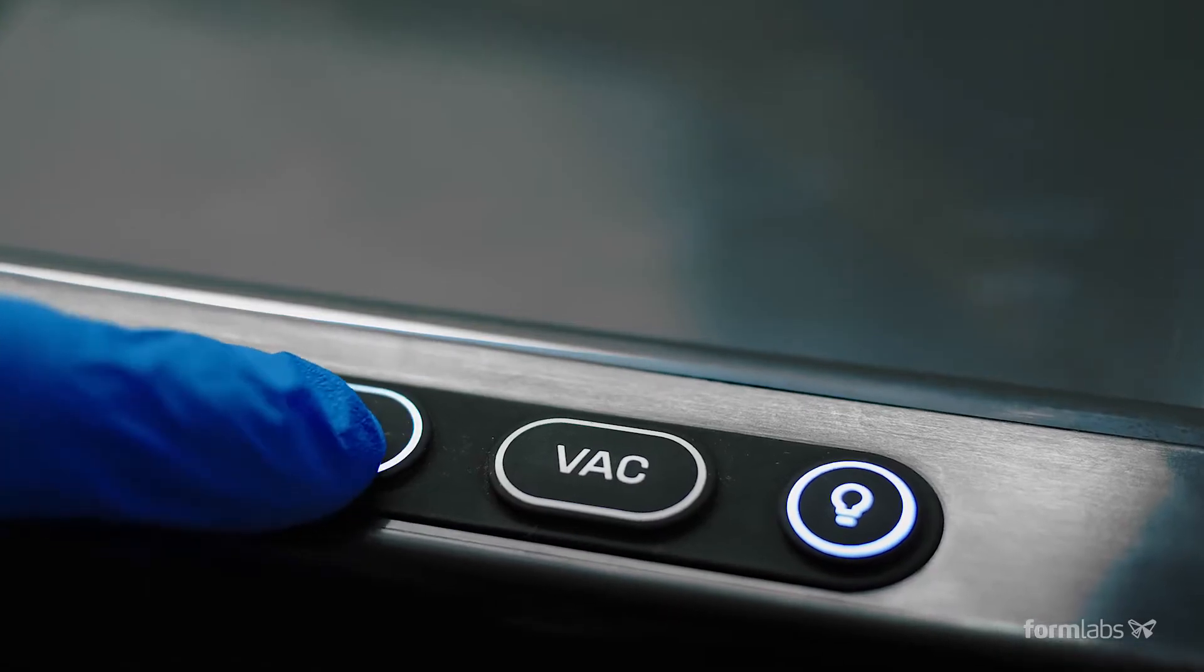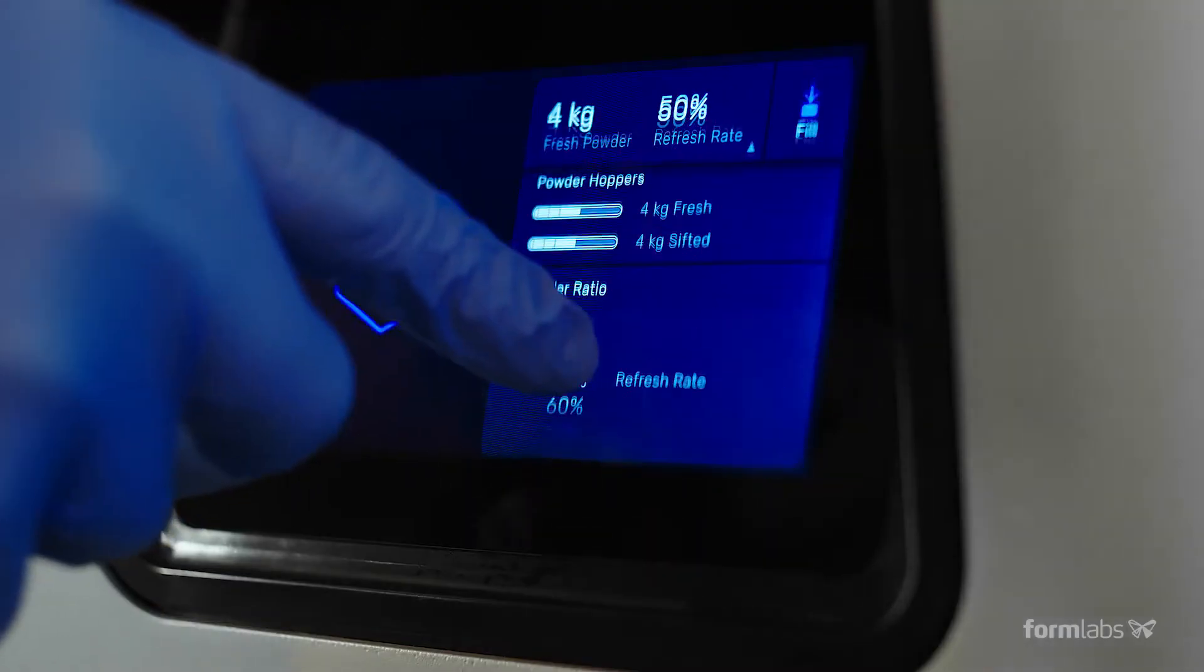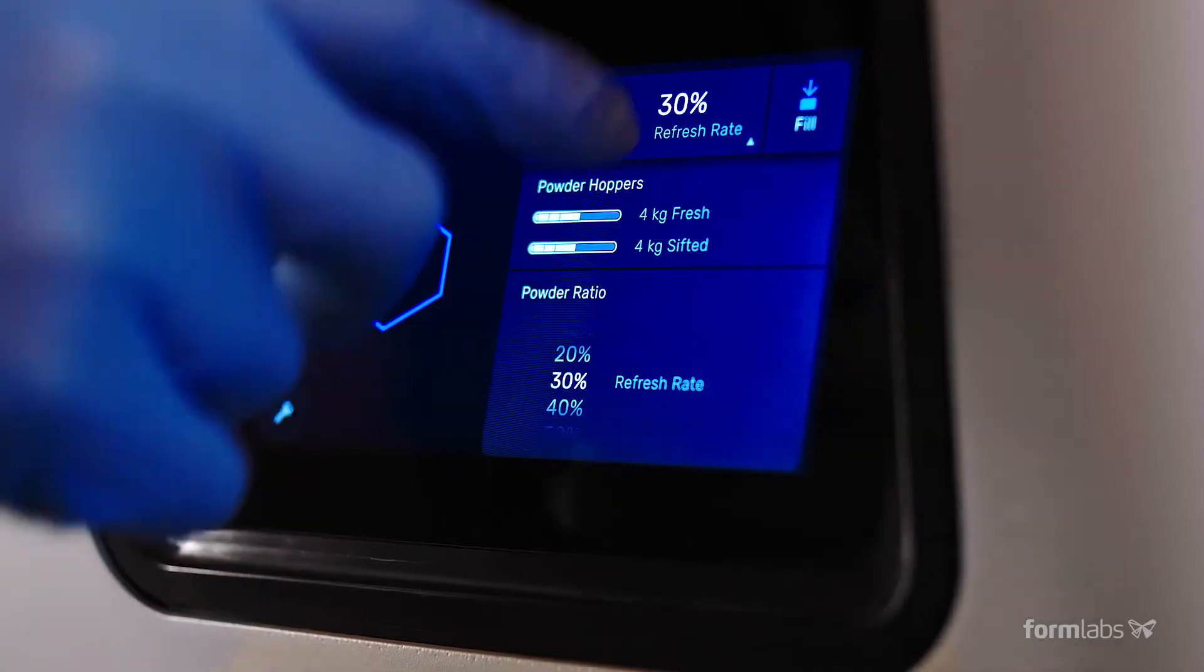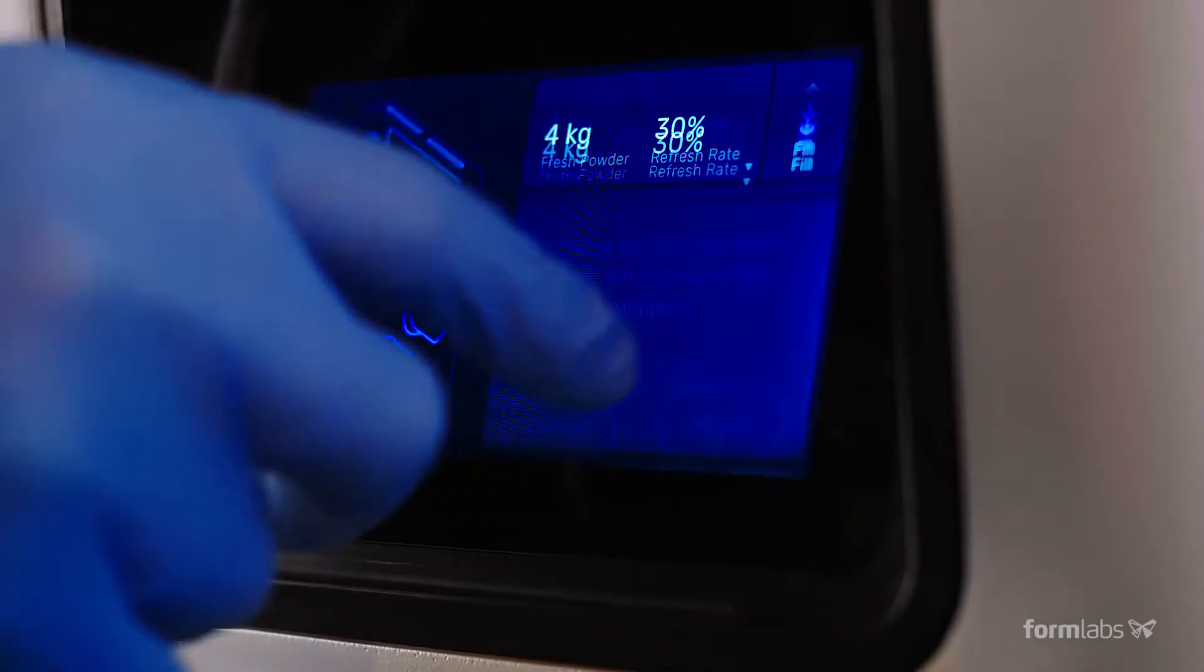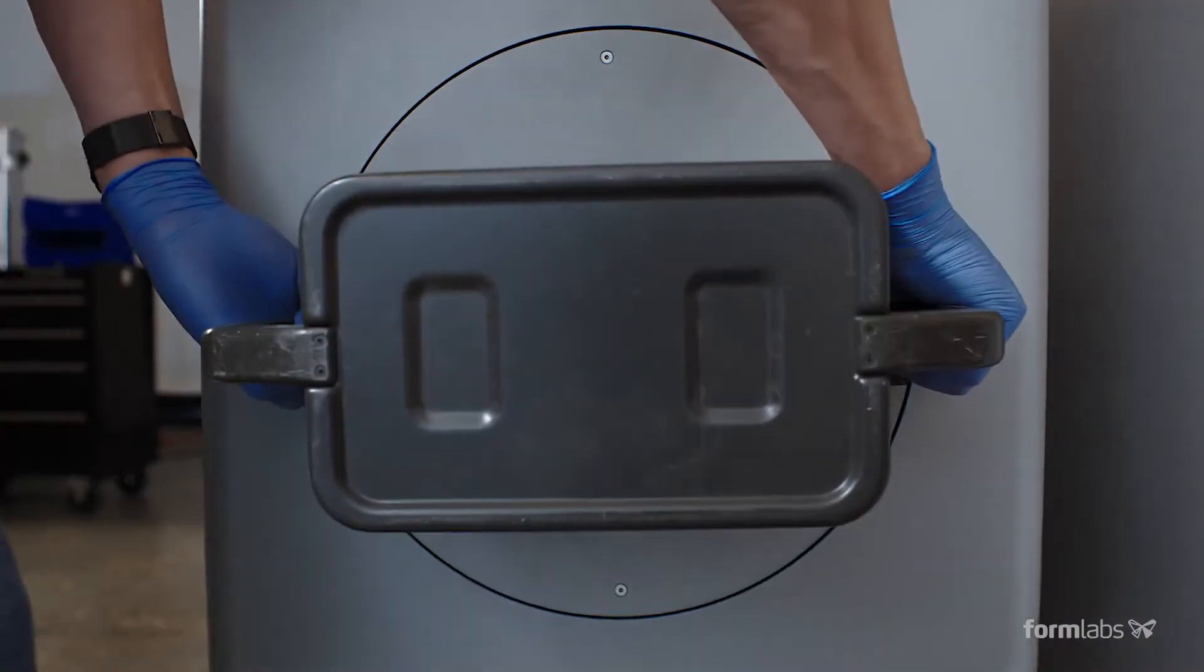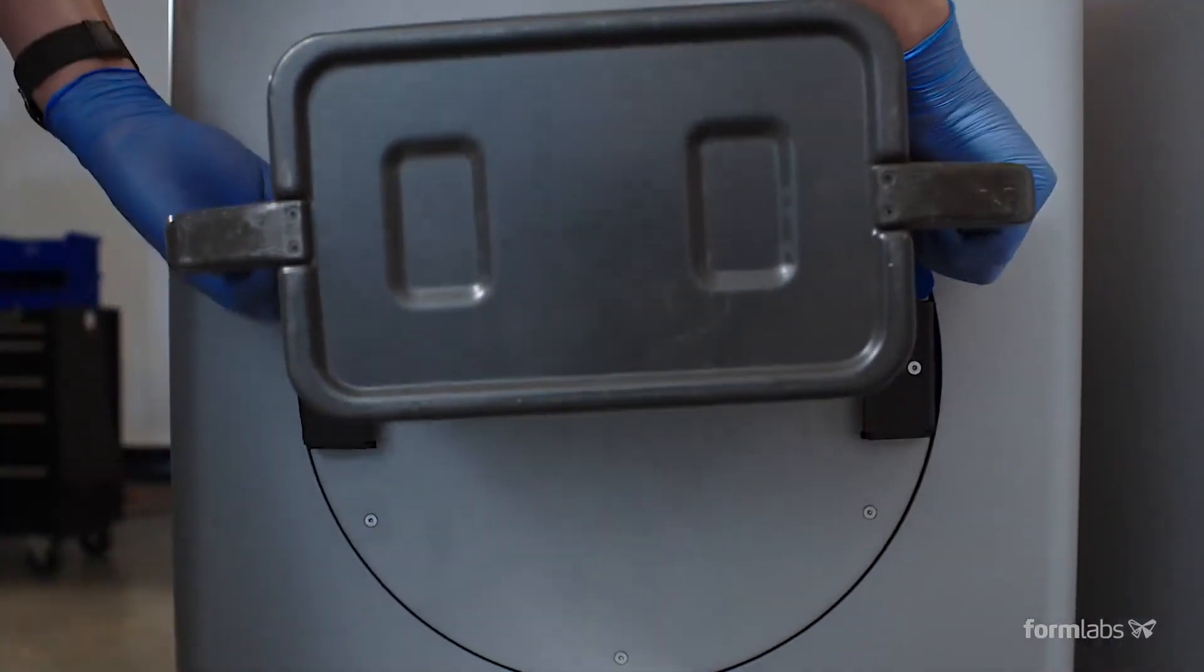Fuse SIFT will automatically dispense and mix used and new powder after you set the ratio. Reduce waste by recycling powder at a 30% material refresh rate. This means you can print with up to 70% recycled powder.